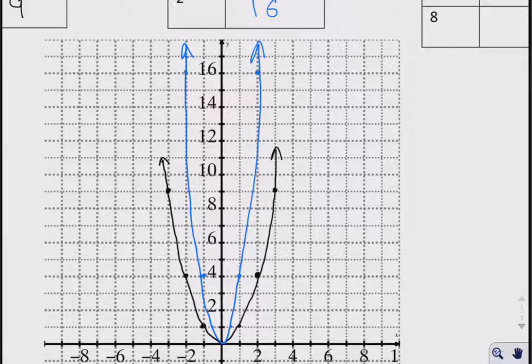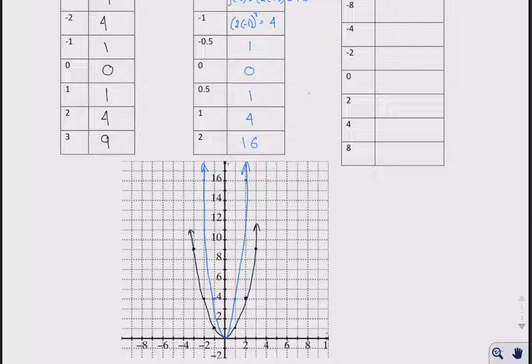So already we notice a difference. Okay, the 2 in front of the x made our parabola narrower. Or, from another point of view, we've compressed it. Okay, think of like squeezing the original one together.